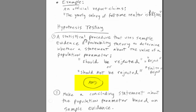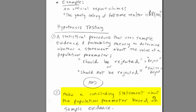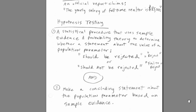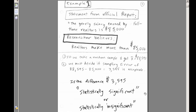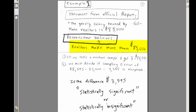This procedure lets us make a concluding statement about the population parameter based on our sample evidence. Here is a statement from an official report: the yearly salary earned by full-time realtors is $85,000. A researcher believes realtors make more than $85,000 in their region. If we go out and take a random sample and get $85,595, we can't just say 'yes, it is bigger' — because this is a sample.